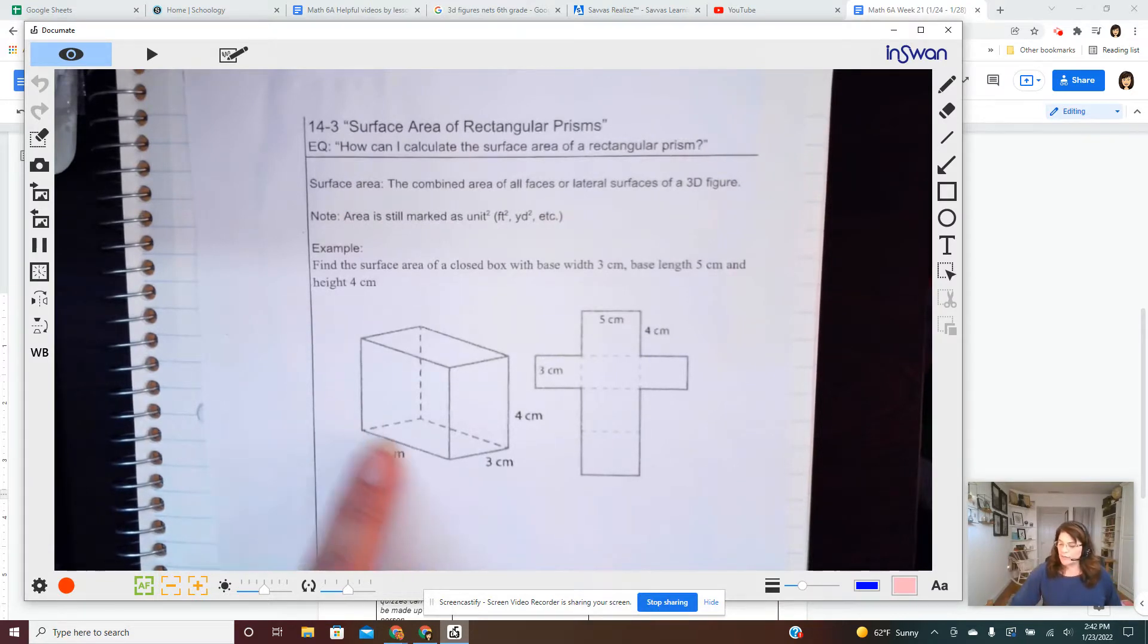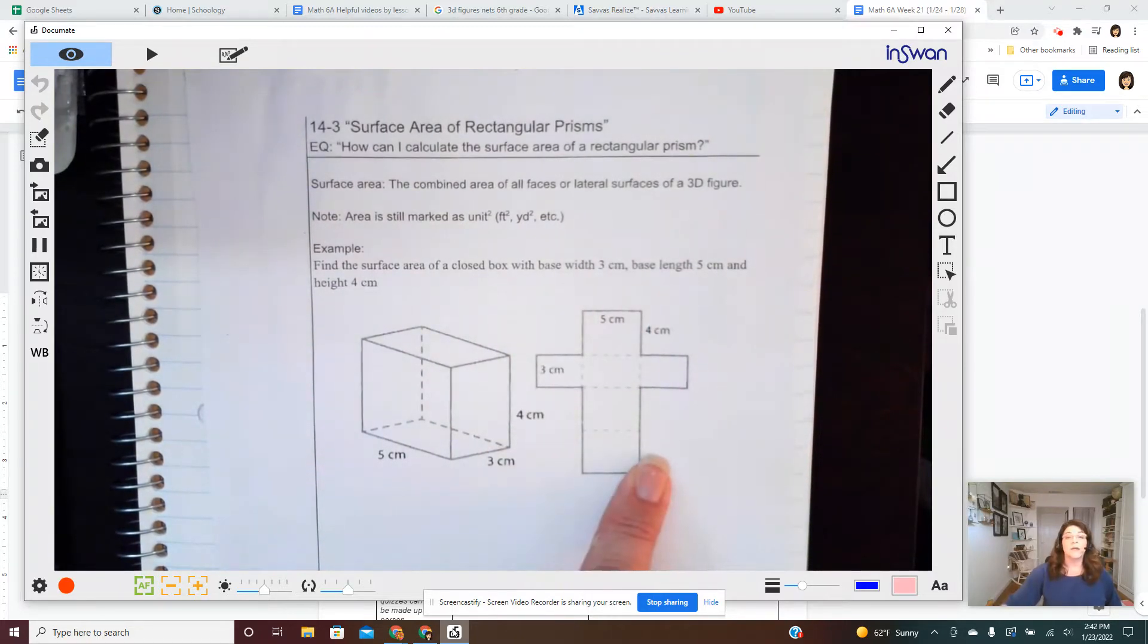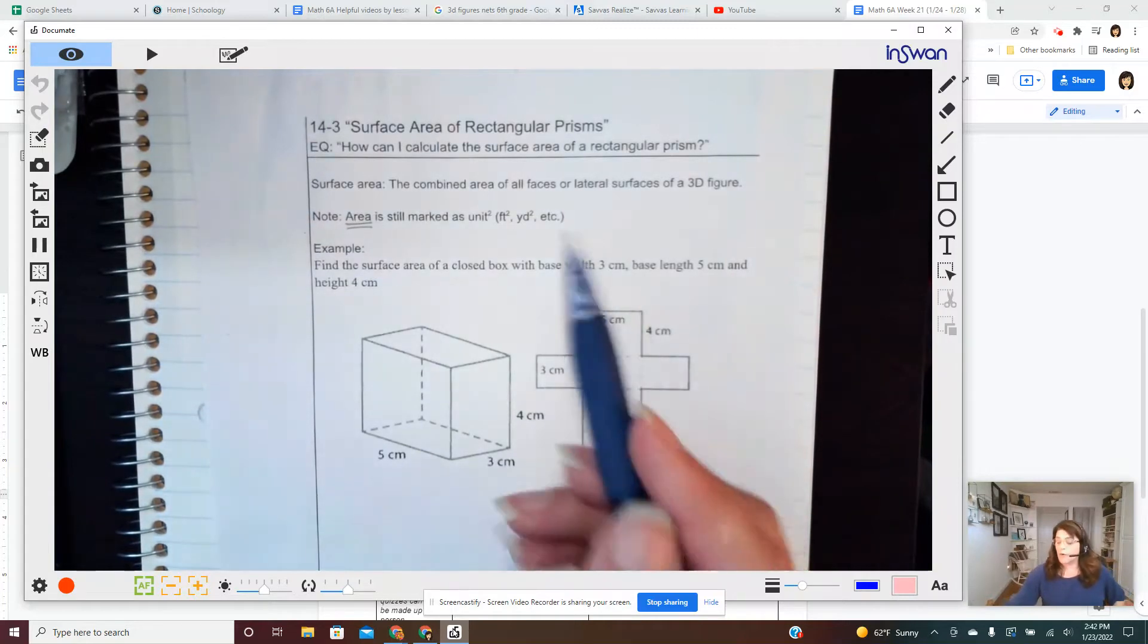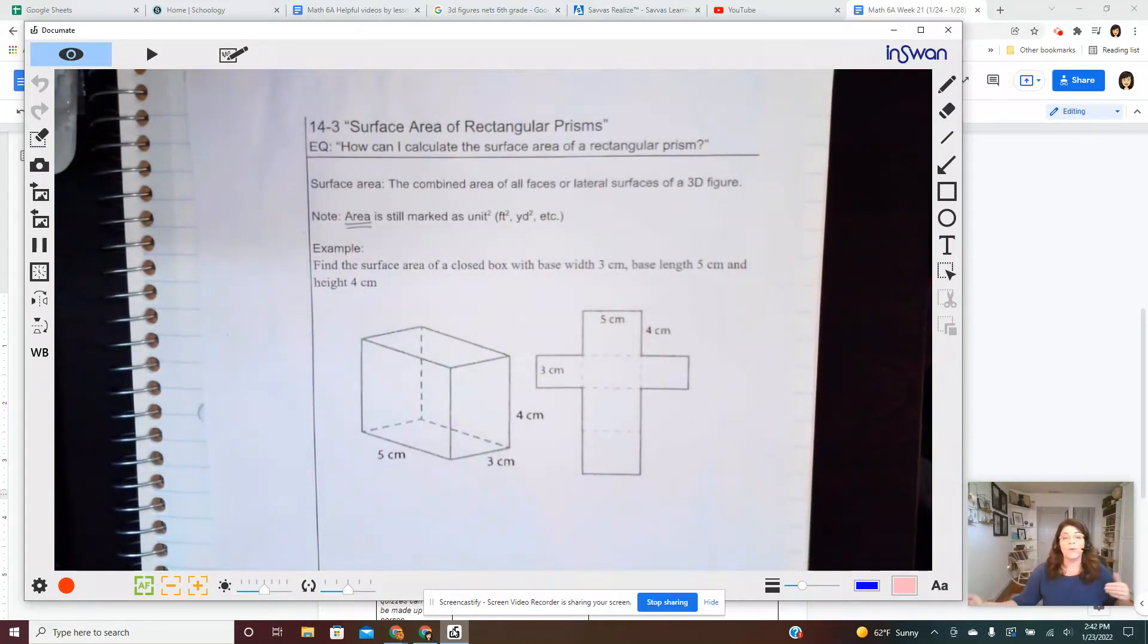So here we have a rectangular prism and its net. Both of them are labeled. We are still doing area. That hasn't changed. So all of our units are still square units.